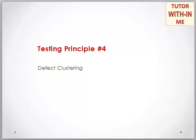Testing principle four is about defect clustering. Testing effort should be focused proportionally to the expected and later observed defect density of the modules. A small number of modules usually contains most of the defects discovered during pre-release testing or is responsible for most of the operational failures. If a module is there and you have been finding a lot of defects in there, that is called defect clustering.